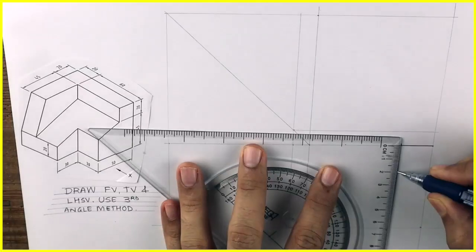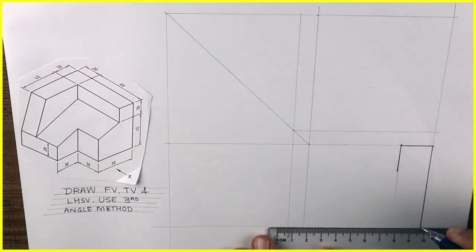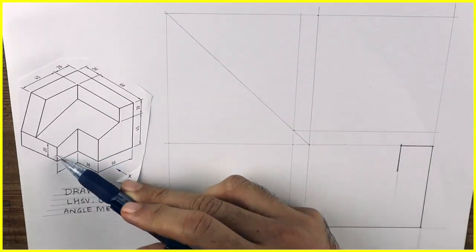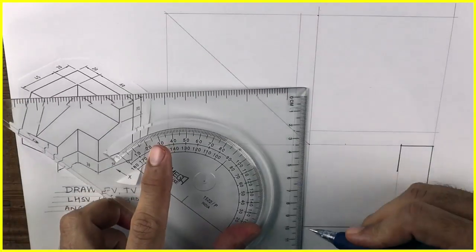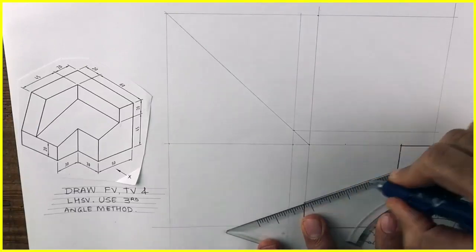We'll take 20. Always remember in orthographic, always draw the slope first. So we'll go down by 20 like this. Then we'll take height 20 and we'll join this slope. This is a very important sum from the technical drawing point of view. Slope is very important.